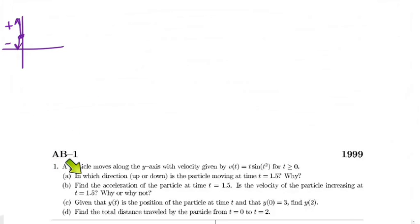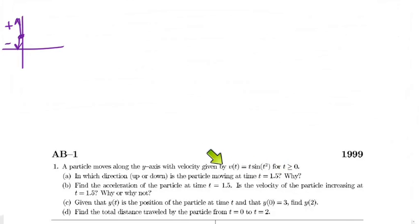Let's look at part A. It says: in which direction, up or down, is the particle moving at time t equals 1.5? So if velocity is positive, we're going to be moving up. If velocity is negative, we're going to be moving down. All you have to do is plug in 1.5 into your calculator to see if you get a positive or a negative answer.